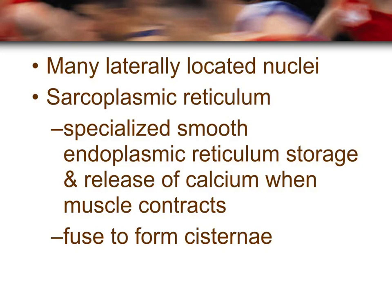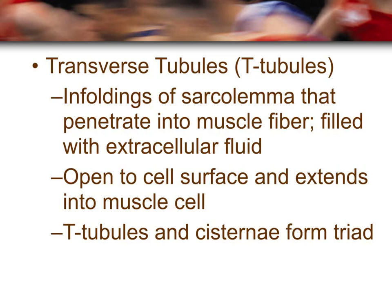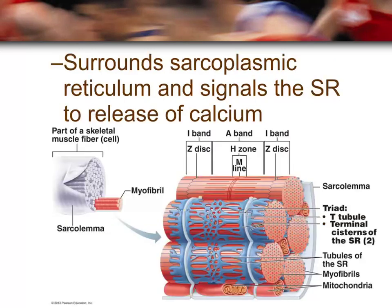Sarcoplasmic reticulum come together and fuse to form cisternae. The transverse tubules, also called T-tubules, form a T-shape because the sarcolemma is folded into the cell and is open to the surface, extending all the way through the muscle cell. The T-tubule and cisternae from the sarcoplasmic reticulum together form a structure called a triad. The T-tubule surrounds the sarcoplasmic reticulum and signals it to release calcium during muscle contraction.